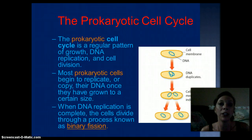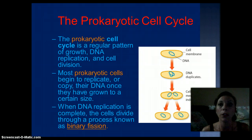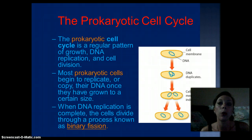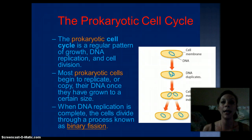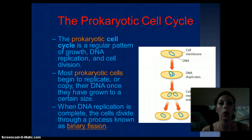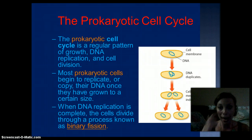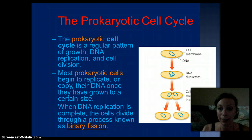Prokaryotic cell division is a little bit different. Of course, there's no nucleus. This occurs through a process called binary fission. The DNA is going to replicate, and then the cell is going to basically split and divide. This is going to happen once a cell reaches a certain size.